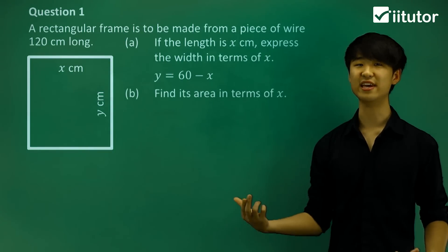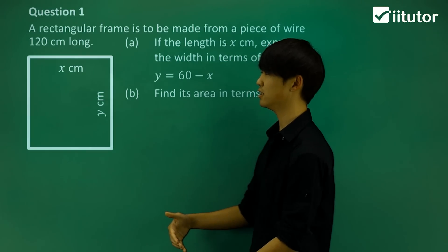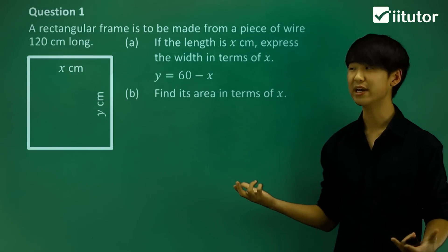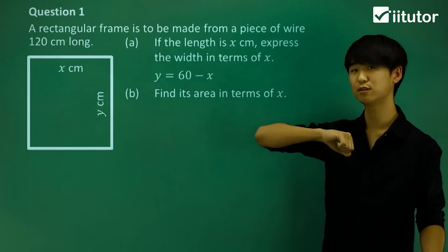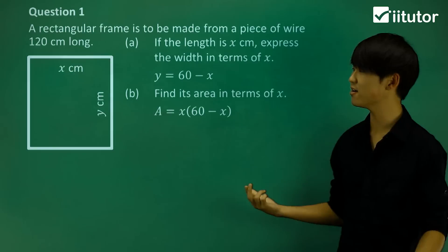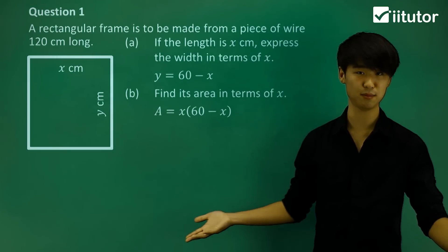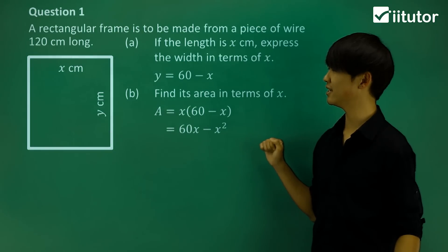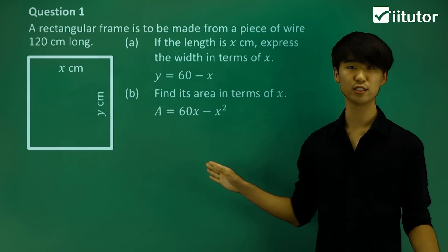Now we're going to find the area of this shape. Finding the area of a rectangle is simple — it's just length times width, which is x times y. But in terms of x, we know y equals 60 minus x, so the area is x multiplied by (60 minus x). Expanding that gives us 60x minus x squared as our area formula.